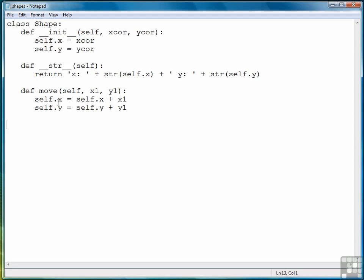Now that we've created our base class Shape, we're ready to create a derived class. In this case, we'll do a Rectangle. So we write class Rectangle, and then in parentheses, we provide the name of the base class, which is the Shape class.